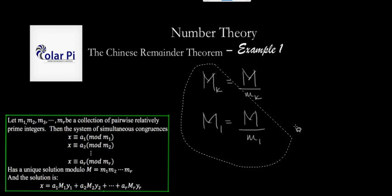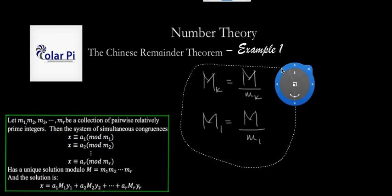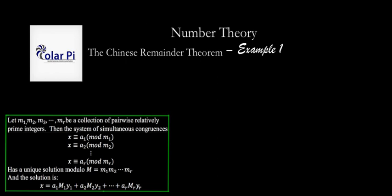Now let's talk about the y's. y_1 is the inverse of capital M sub 1 mod little m sub 1. y_2 is the inverse of capital M sub 2 mod little m sub 2, and so on. If you don't get it, you'll get it when we do the example.